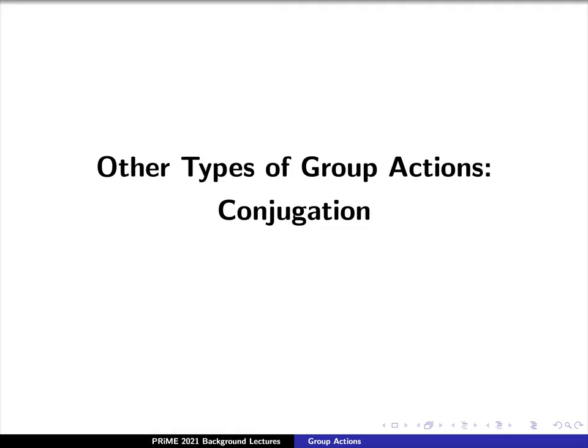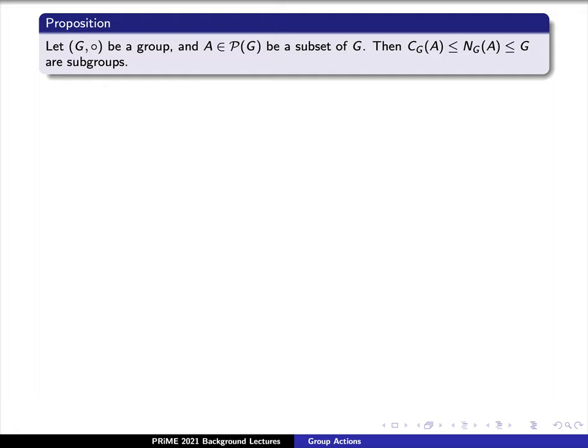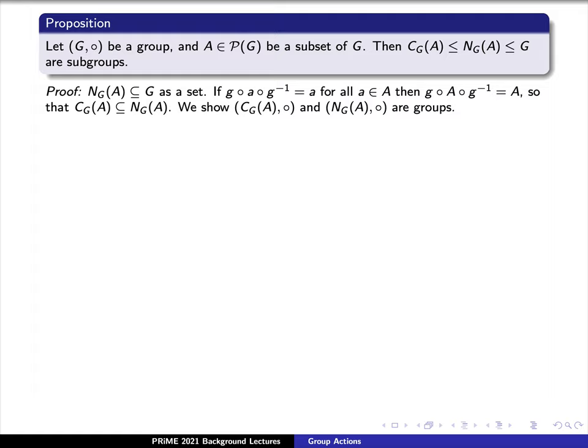We want to discuss some other types of group actions — those that we'll call conjugation. Let G be a group and let the power set of G denote the collection of all subsets of G. Now let's say that A is indeed a subset of G, that is, it's an element of the power set of G. Then the centralizer of A is a subgroup of the normalizer of A, which in turn is a subgroup of G. Here's a proof. We know that the normalizer of A is a subset of G. For example, if g times a times g inverse equals a for all lowercase a in our set capital A, then if this is true for some element lowercase g, then g circle a circle g inverse equals a for the same element g. And so this actually shows that the centralizer of A is contained in the normalizer of A.